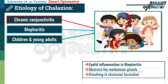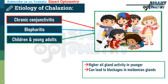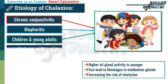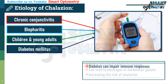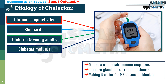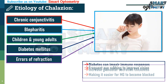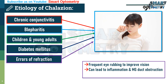Third, children and young adults: higher oil gland activity in younger individuals can lead to more frequent blockages in the meibomian glands, increasing the risk of chalazion. Fourth, uncontrolled diabetes mellitus: diabetes can impair immune responses and increase glandular secretion thickness, making it easier for meibomian glands to become blocked. Fifth, errors of refraction: frequent eye rubbing to improve vision in uncorrected refractive errors can lead to chronic eyelid irritation and inflammation, causing meibomian duct obstruction and subsequent chalazion formation.